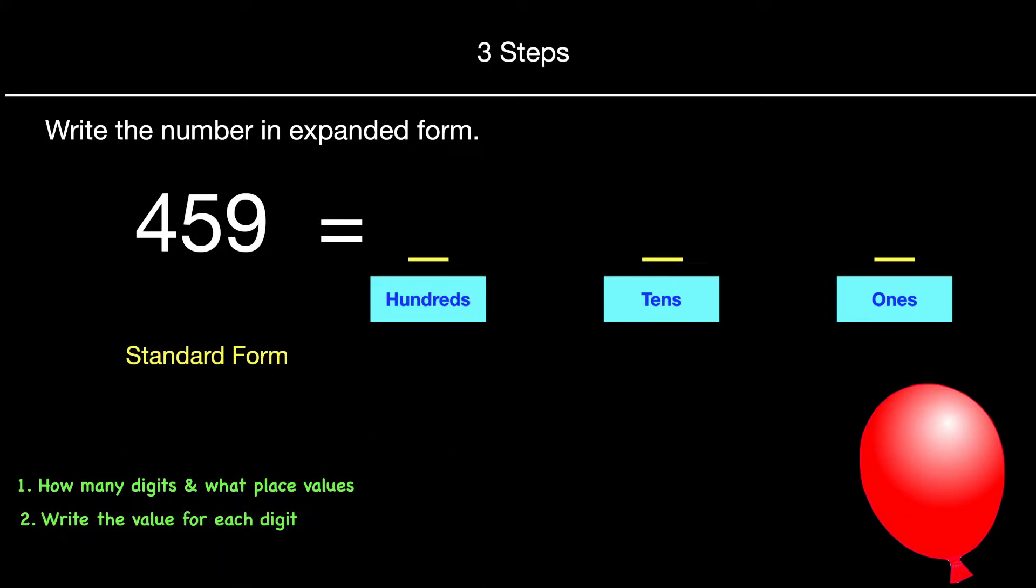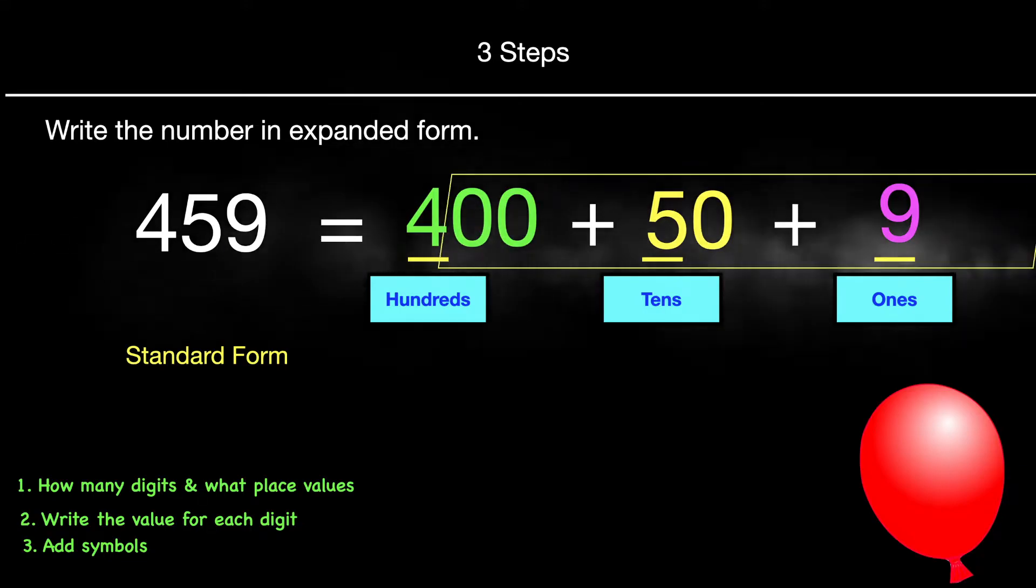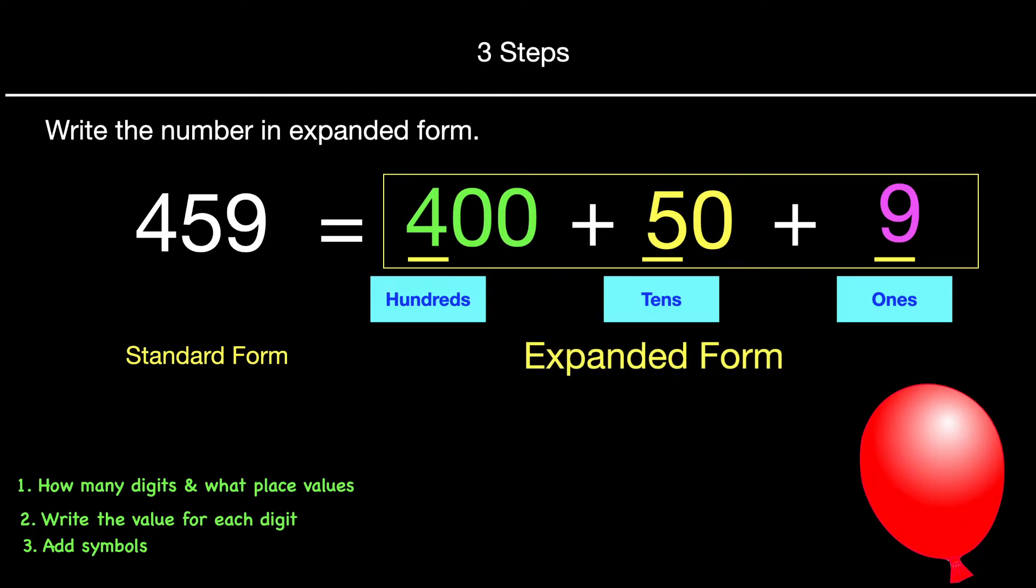Now we're going to write the value for each digit. We'll start with the hundreds. So the four is really four hundreds, the five is 50, and the nine just stays the same. Then we add our symbols, the addition symbols. Now we have our number in expanded form.